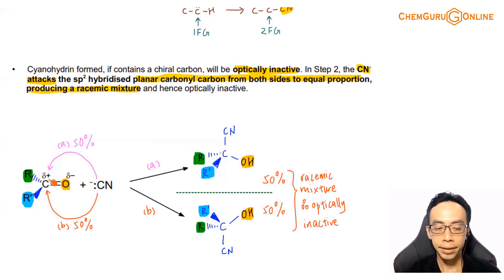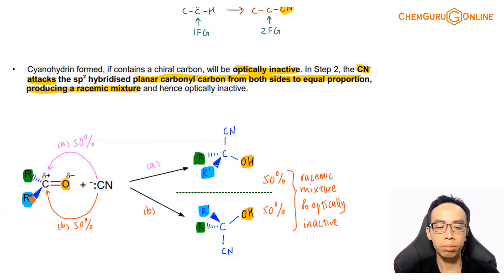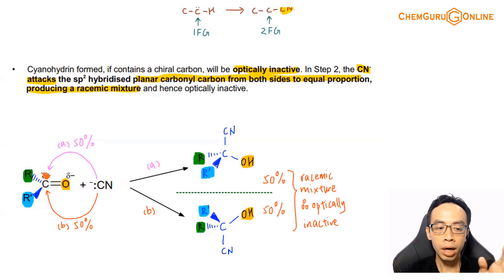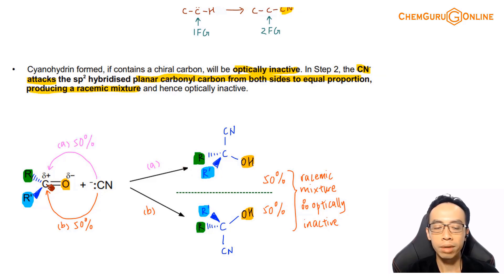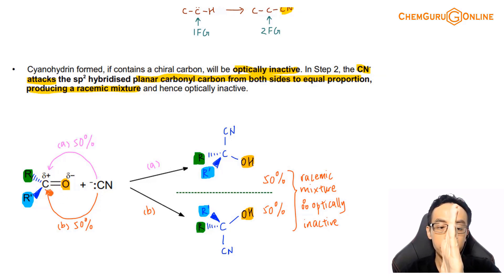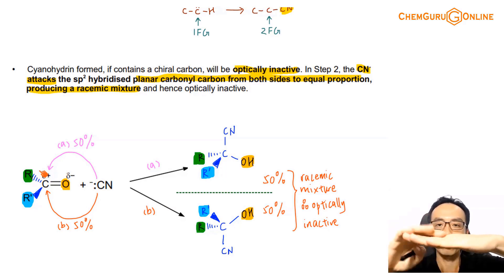In the notes, the bond is drawn as a normal bond, but we can do a slight modification: draw R' towards you with a solid triangle, and draw R away from you with a dotted triangle. The reason we end up with a racemic mixture is because of the shape of the carbonyl carbon. The carbonyl carbon is trigonal planar — it is flat — so both sides are equally exposed.